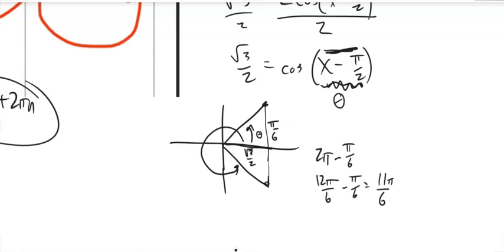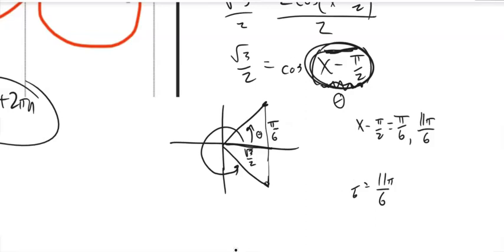So notice I've got these two angles, pi over 6 and 11 pi over 6. Now, x minus pi over 2 is equal to those things. So if I want to solve for x, I'm going to have to do one more step, which is add that pi over 2 to everything.